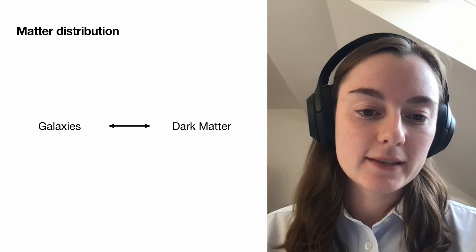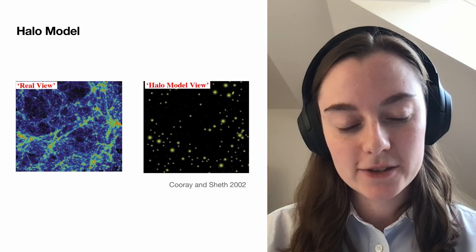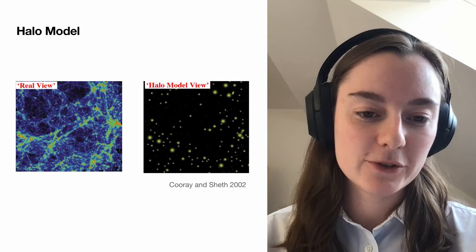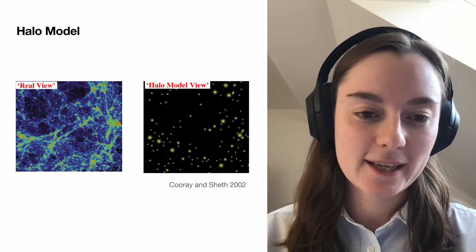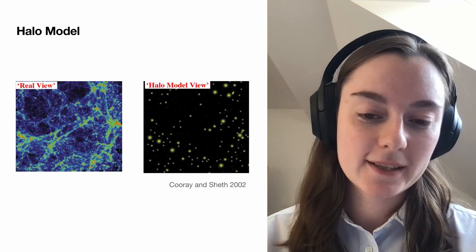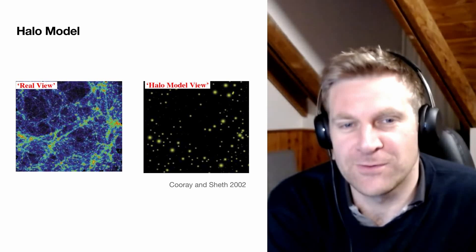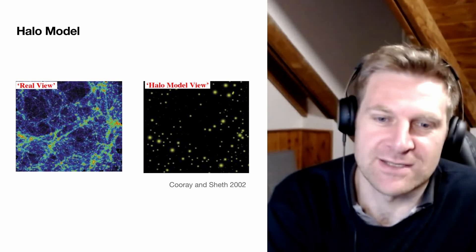The halo model essentially assumes that dark matter clusters into dark matter halos and that all matter exists within dark matter halos. This model has been very successful, but it contains a number of strong assumptions: that dark matter halos linearly trace the underlying matter distribution, that dark matter halos are spherical, and that they can be completely defined by their own mass.